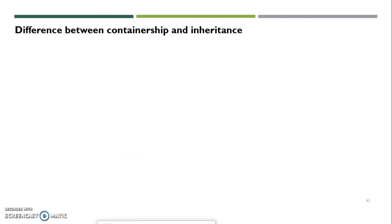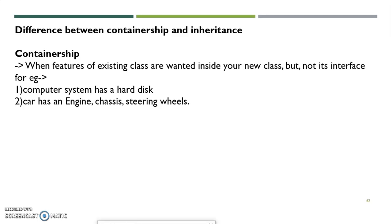The difference between containership and inheritance: in containership, when features of an existing class are wanted inside a new class but not its interface — we do not want the interface, only the features. For example, a computer system has a hard disk; a car has an engine, chassis, steering wheels. So whenever we say a computer system has a hard disk, this is a containership feature.